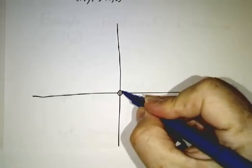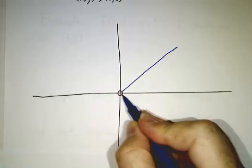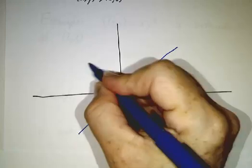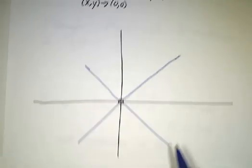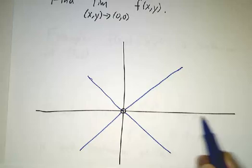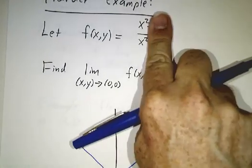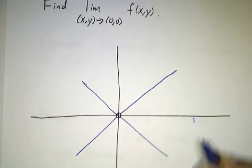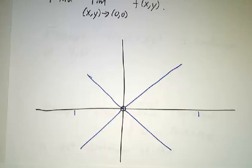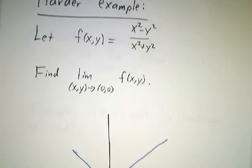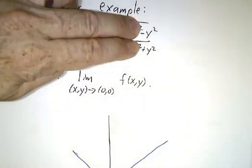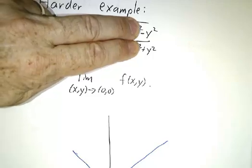We're going to draw some contour lines. And the contour lines look like straight lines. Whenever you're on the x-axis, that's y equals 0, f of x, y is 1. So this is the contour line with value 1. Whenever you're on the y-axis, that's x equals 0, you get minus 1.